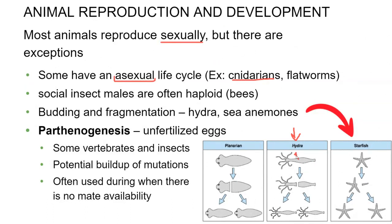A little branch will grow off of the edge of the hydra, and that branch can eventually break off, developing into two exact clones. The planarian here, which is a flatworm, reproduces by something called fragmentation, which the starfish and the hydra can do as well, but the planarians bring it to an extreme. If you cut them in half, they will develop into two exact copies.